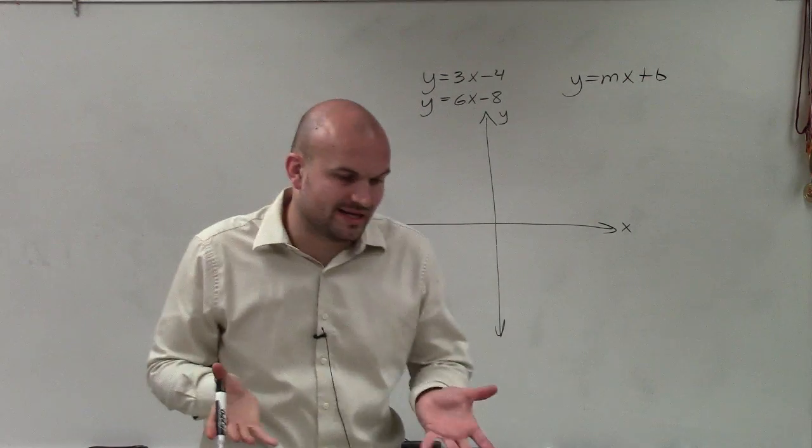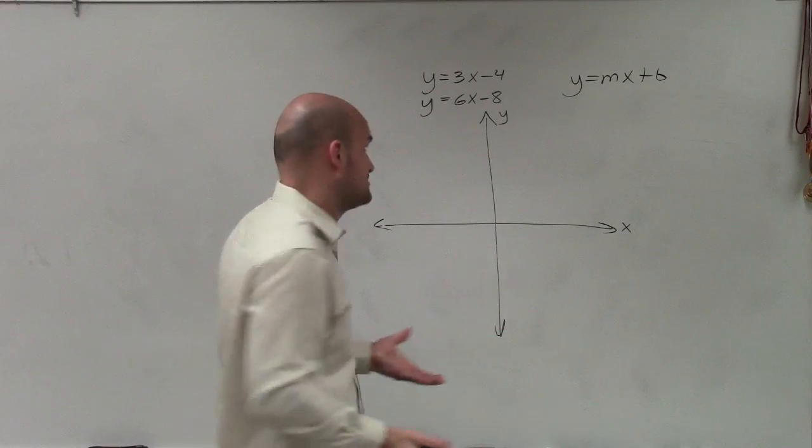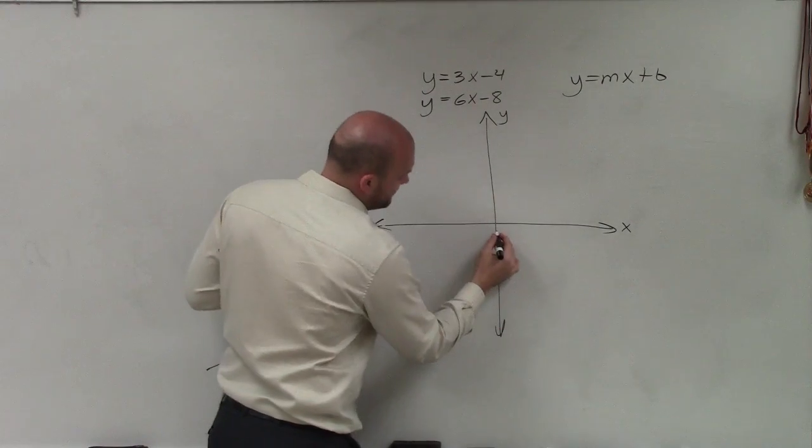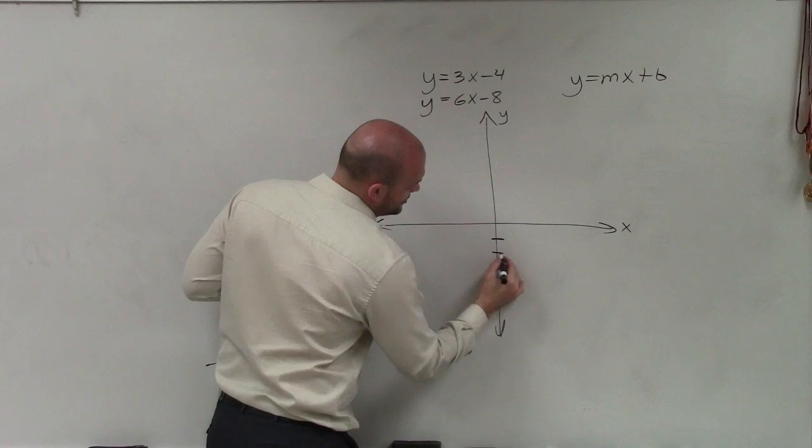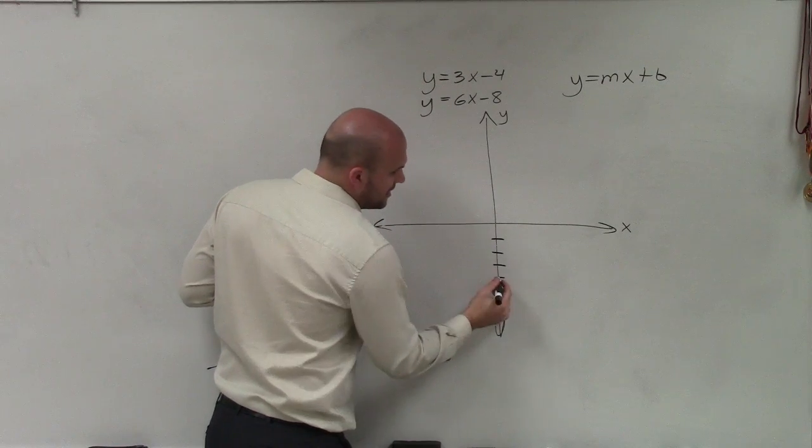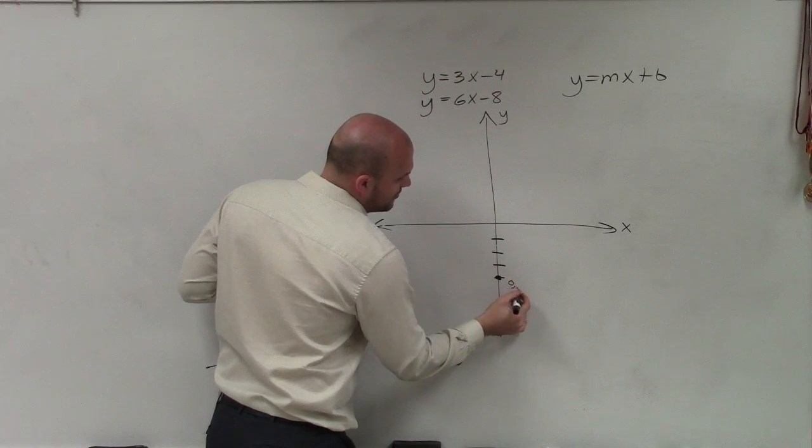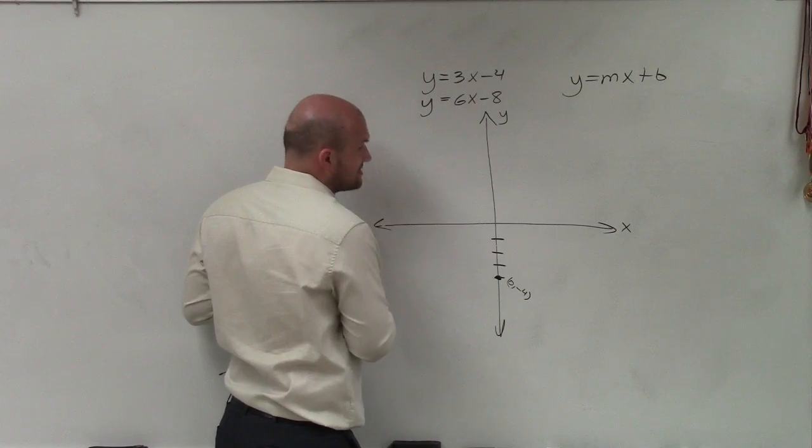When doing this, the first thing we want to do is identify the y-intercept. So the first equation, my y-intercept is negative 4. So I'll go down negative 1, 2, 3, 4. And then I'm going to make a nice big dot there. And that's the y-intercept. That's where my graph is going to cross my y-axis.